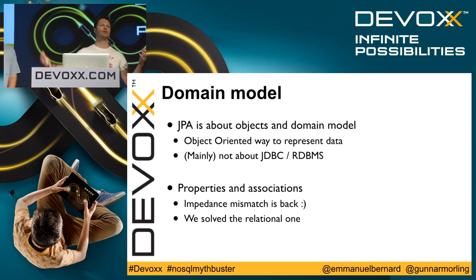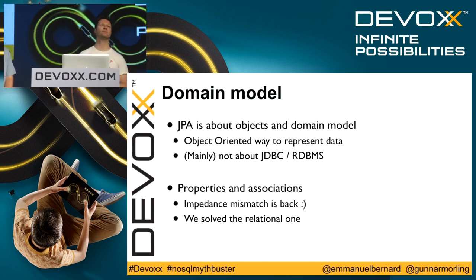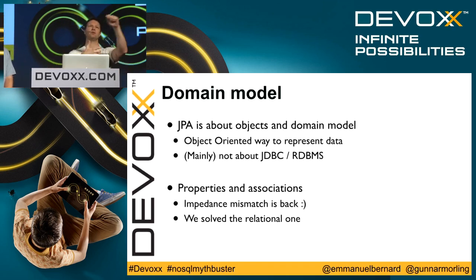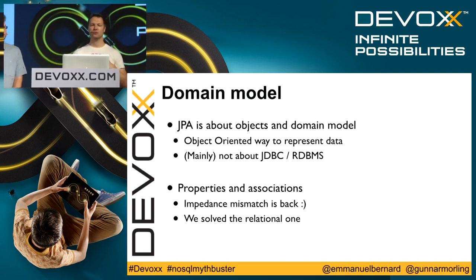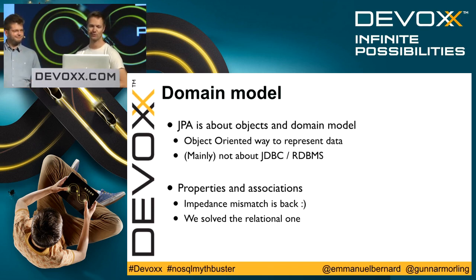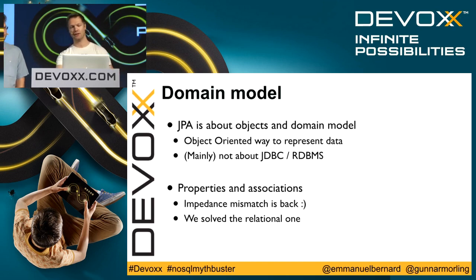JPA is about POJOs and relations — let's call them a domain model, your objects — and persisting those objects. Probably 75 to 80% of the spec is all about that. The part of the spec that specifically talks about JDBC or SQL is actually quite small because we leave that as an implementation detail. So what we talk about is the object, the relations between them, and the life cycle. A good chunk of the JPA API is actually only about objects, the relations between them, and how you persist that. And then you've got properties and associations — how do I store that in a data store that has no joins? That is an interesting challenge. We've already managed to solve the impedance mismatch before, so let's try and solve that one.